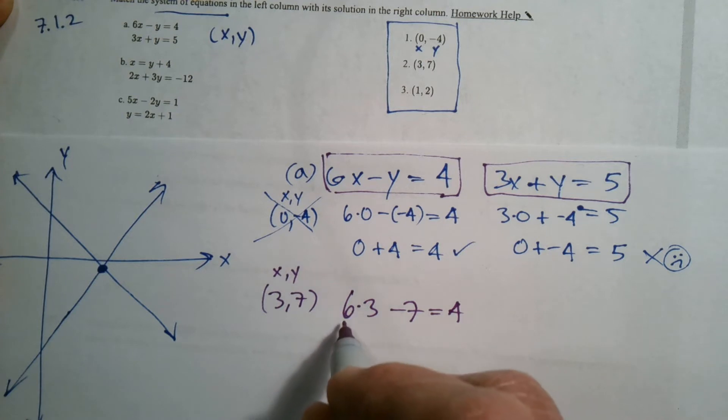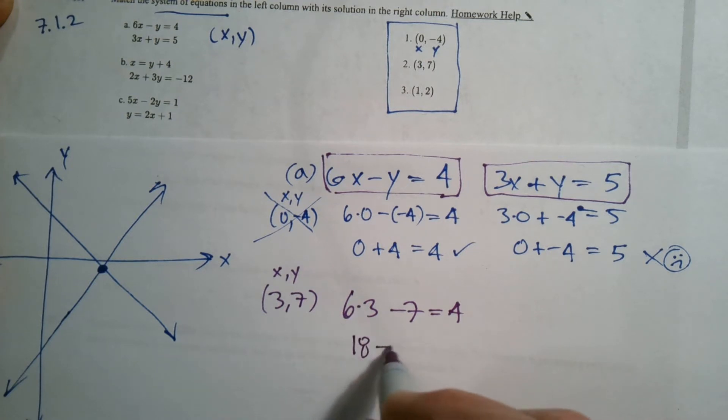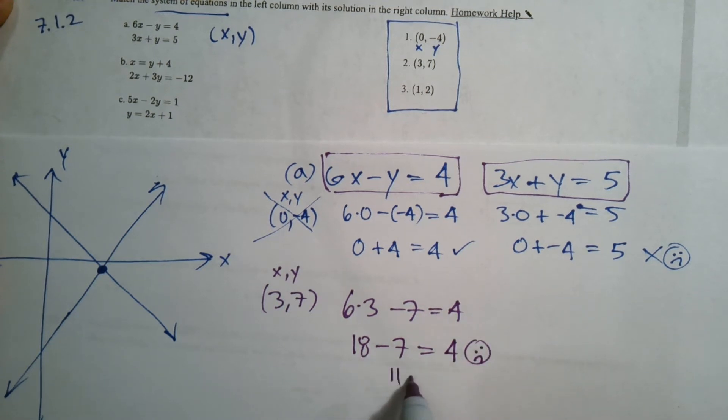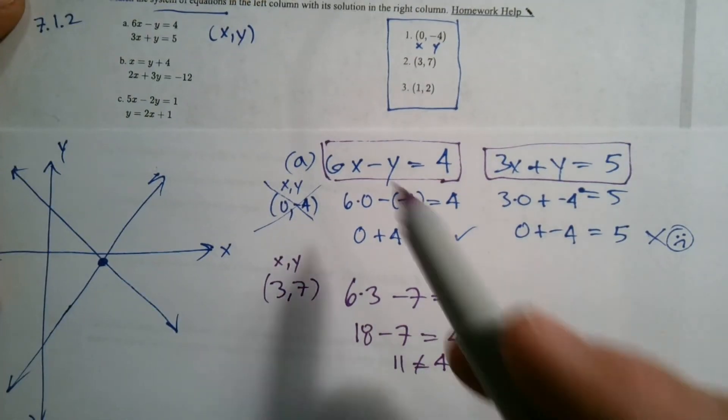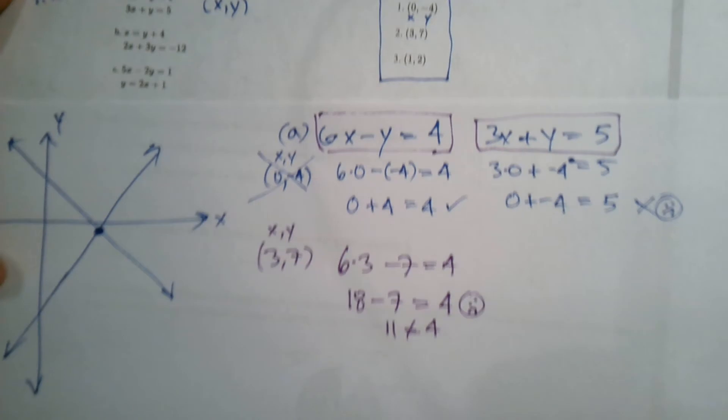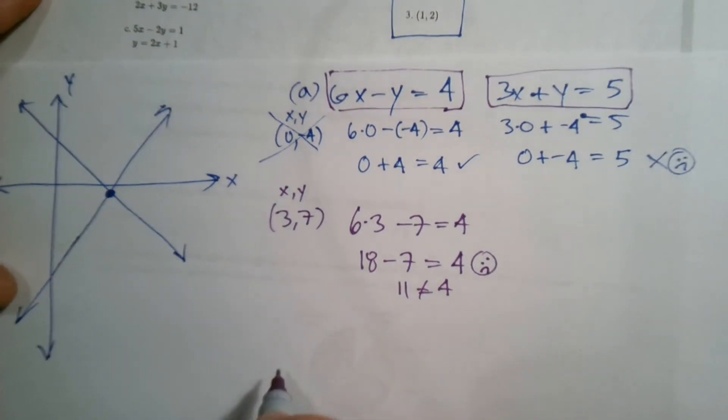Okay. I want to know, does that equal 4? So I look in, I go say 6 times 3 is 18. 18 minus 7, does it equal 4? No, it does not. 18 minus 7 is 11, and 11 does not equal 4. So at that point right away, I don't even need to check this one over here. If it doesn't work for this one, it's not going to be the answer.